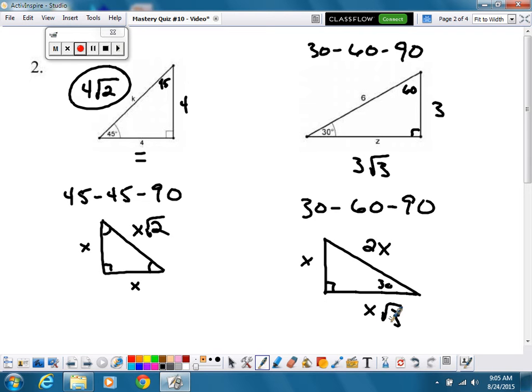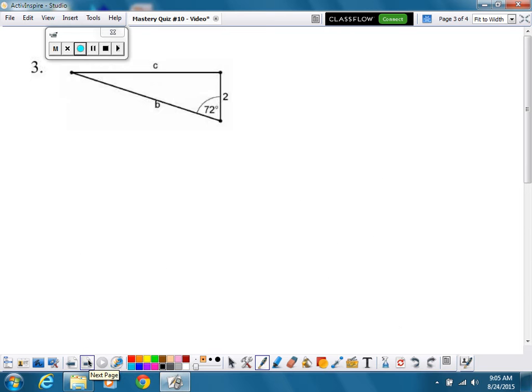Next question, now things get a little more complicated here. Can't use the Pythagorean theorem, we only know one side and there's no special triangle here. We got to figure out and use some trigonometry, SOH-CAH-TOA. Sine is opposite over hypotenuse, the cosine is adjacent over hypotenuse, and the tangent is opposite over adjacent. We need to figure out which one of those trig functions we want to use. We have two sides to find, c and b. Doesn't matter which one you go with first. Let's start with b.